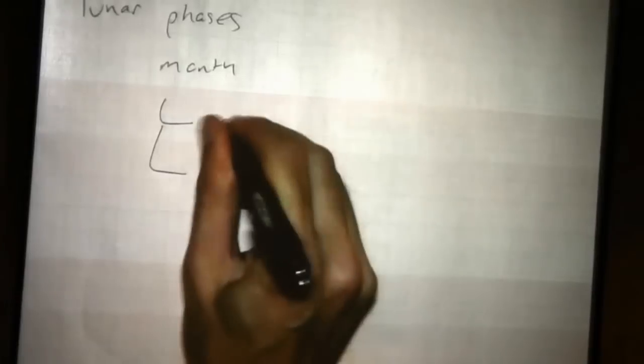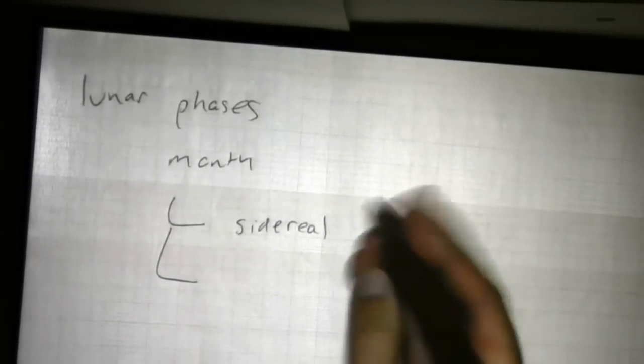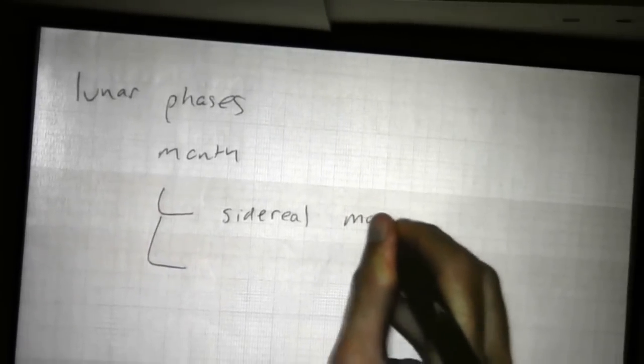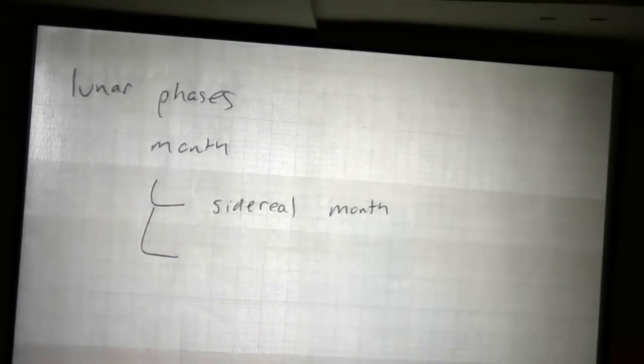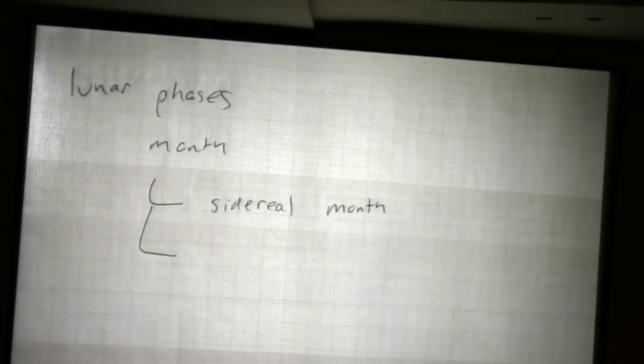The first one is called sidereal, just like sidereal day. Sidereal means what again? Star. So this is the star month. A month, generally speaking, is the amount of time it takes for the moon to go in its orbit. But precisely with respect to what? Sidereal month is with respect to the stars.